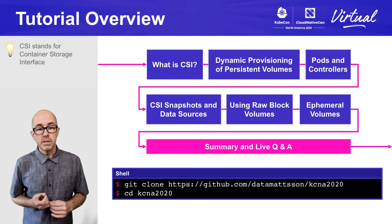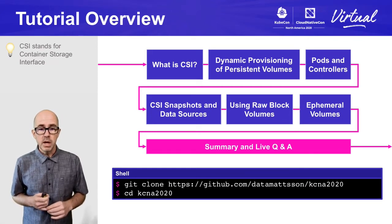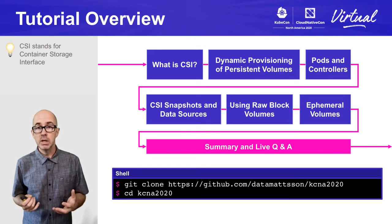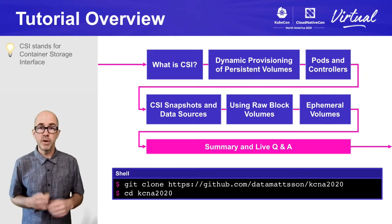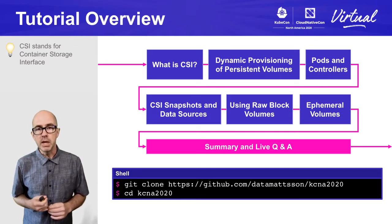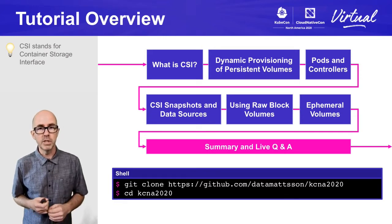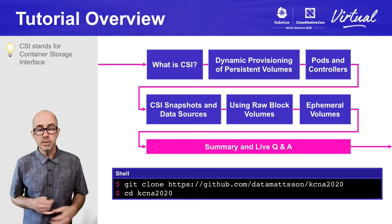Using raw block volumes is something introduced in CSI — I'll show how those different use cases work. Another interesting concept is using ephemeral volumes with your pods, which makes external persistent storage act like a container. There are various ways to attach ephemeral volumes to pods. At the end there will be a live Q&A. This session is prerecorded but I will be there in person to answer questions. I'll also be hanging out in the Slack channel throughout the event.